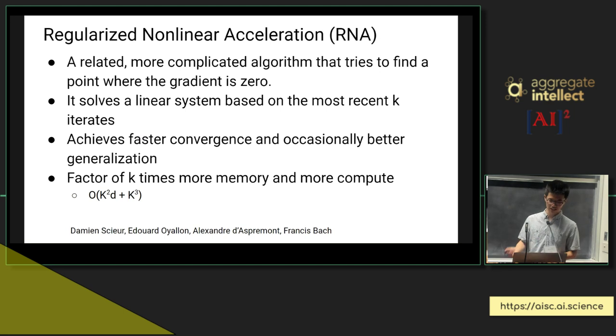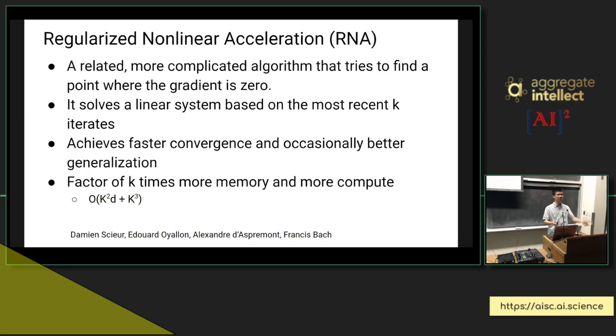This shows that even in deep neural network space, averaging weights tends to get you to a region of lower loss surface, of lower test error. One other work is people have looked at trying to find the best weighted average weights by trying to find a position where the gradient is zero, because that corresponds to either a minima or a saddle point. And you can do this by solving a system of linear equations based on your past iterates. However, this takes more memory, which is like k, the number of iterates you consider, and by the length of your neural network, which could be millions of parameters.